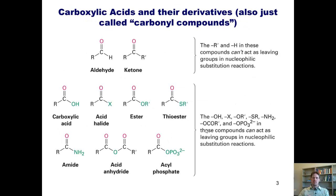Carboxylic acids and their derivatives are often called carbonyl compounds. A carbonyl, simply put, is a carbon-oxygen double bond. As you can see in this slide, there are nine different kinds of carboxylic acid derivatives that we will discuss in this chapter.